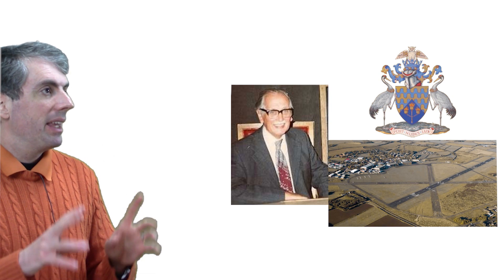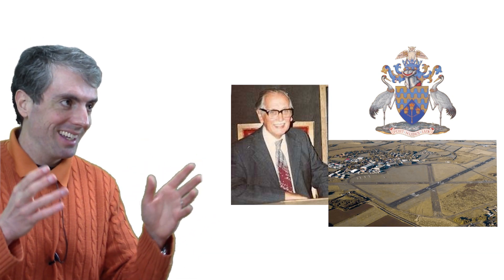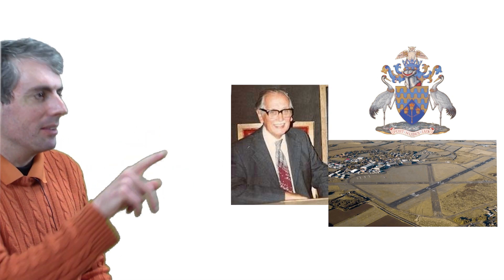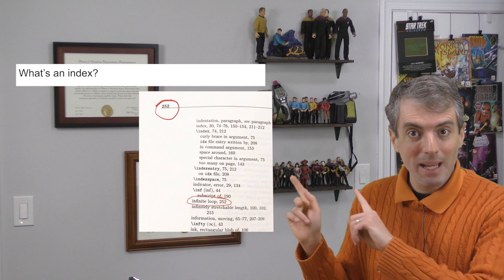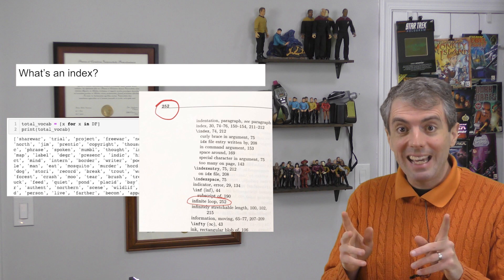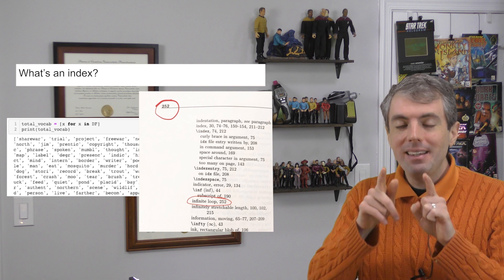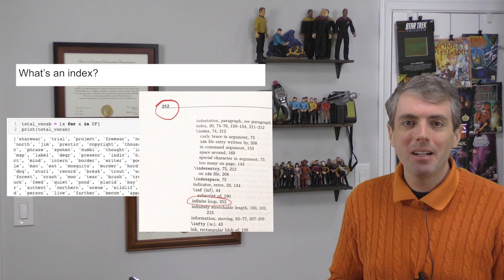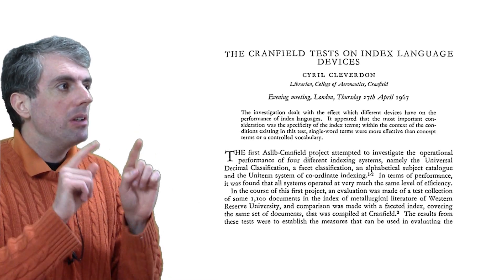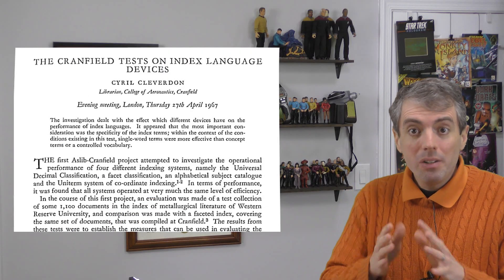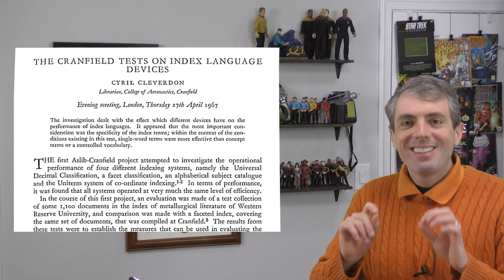Cyril Cleverdon was in charge of the library there, and he was big into computers, which were a new thing at the time. He wanted to see if he could measure how good an index was. When I say index, if you're over 35 and went to a public school, you might think of the sort of thing in the back of a book. But if you're younger or a computer scientist, you probably think of an index as a lookup table of every word possible in a document. Cleverdon's claim, which was quite controversial at the time, was that you could look up documents based on the words in the documents — you didn't need a laboriously created index. You could use a machine, or an engine, to search through them. The academic community at the time was skeptical; there's no way that these newfangled search engines could be better than a trained librarian armed with a trusty card catalog.